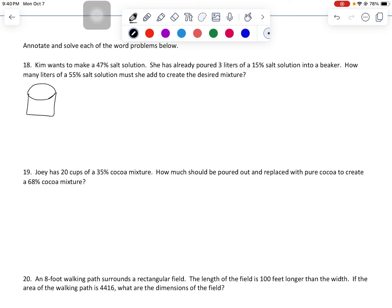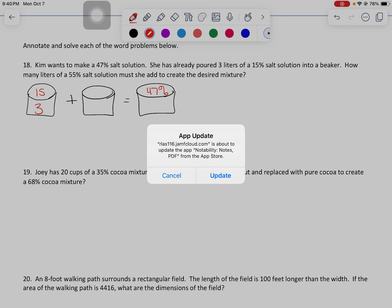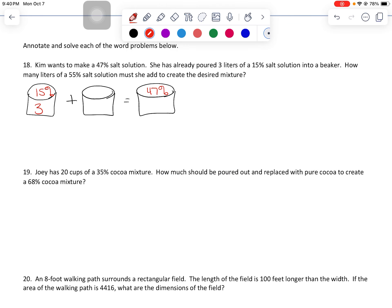All right, she wants to make a 47% solution. She has already poured three liters of a 15% solution. So 47% is what she wants, three liters of 15%. How many liters of a 55% salt solution must she add to create the desired mixture? So I don't know how many that is. So all of these percentages are in terms of salt. And then our quantity here, we're starting with three liters. We're going to add x liters. So three plus x.